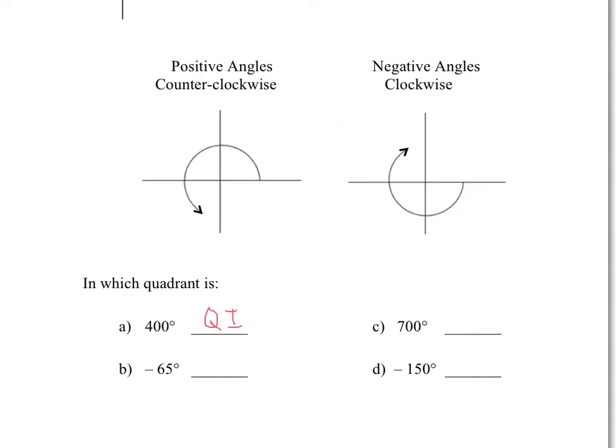Just a quick review - quadrant one's over here, quadrant two, quadrant three, and quadrant four. So this is quadrant one, this is quadrant two, this is quadrant three, and this is quadrant four. So negative 65 degrees would fit into quadrant four.